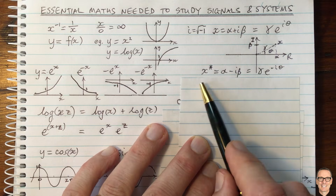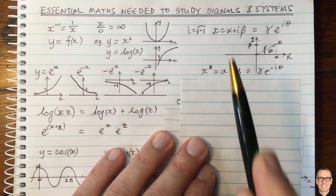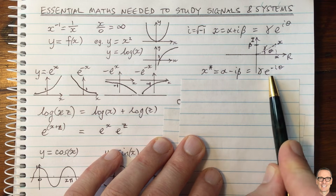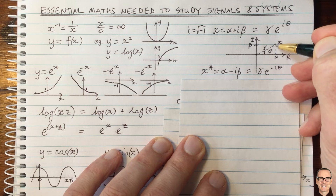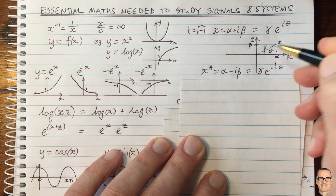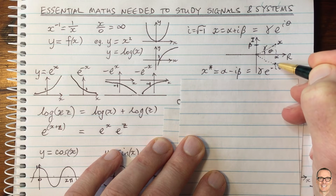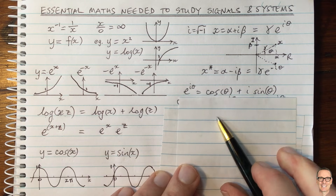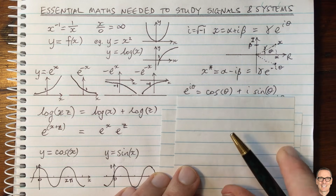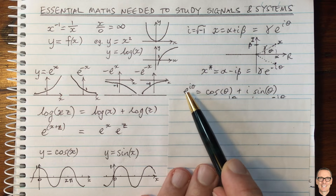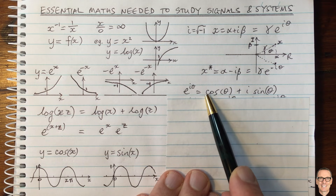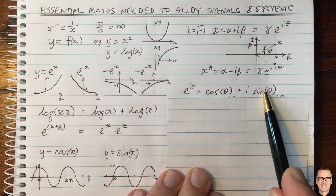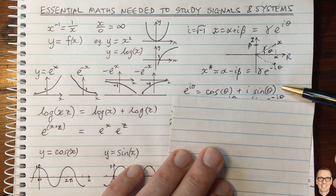Another important thing to know is complex conjugates. The complex conjugate of a complex number is simply the same real component with a negative imaginary part. We can also write that as the same magnitude but with a negative phase — in the complex plane it's the point flipped down to the negative side. And there are relationships between complex numbers and cosines and sines. We can write that e to the i theta equals cos of theta plus i times sine of theta. This expression — Euler's formula — will come up all the time in signals and systems.